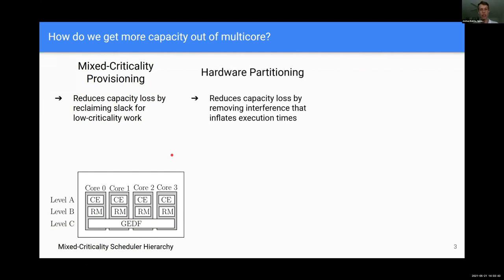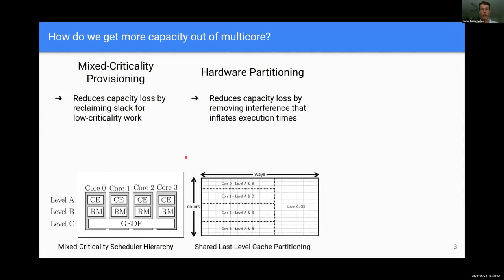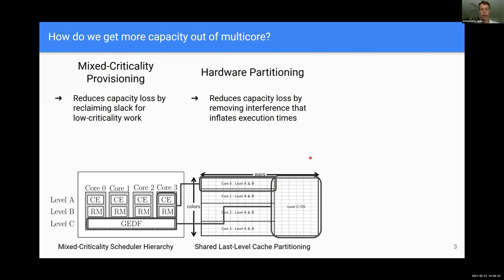Another way to get capacity out of multi-core is hardware partitioning, which reduces capacity loss by removing interference that can inflate execution times. A common application is to the last level cache. We can subdivide it using cache coloring and way partitioning, allocating hard real-time tasks their own exclusive portions separate from soft real-time work, preventing soft real-time work from evicting cache lines from hard real-time tasks.